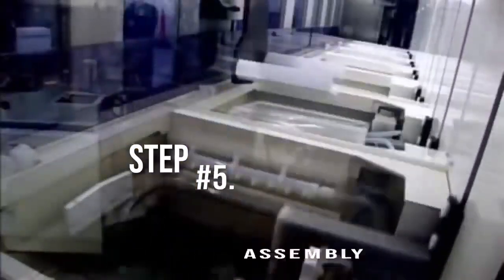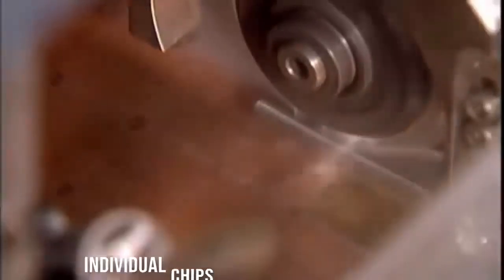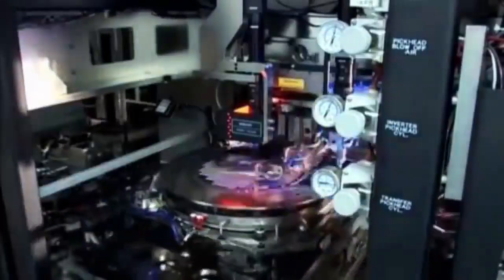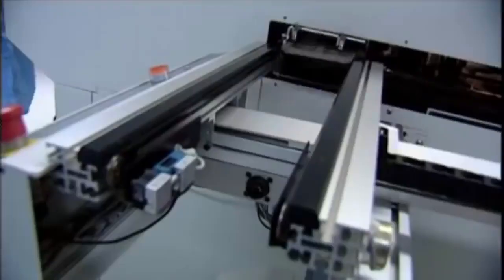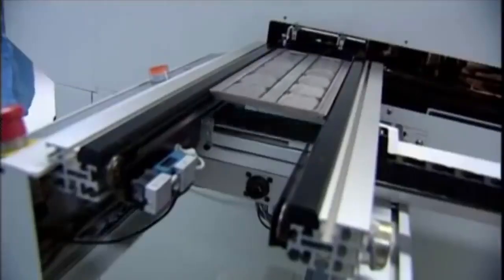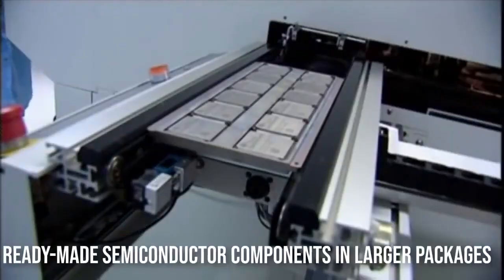Step 5: Assembly. The assembly is the stage where individual chips are placed on a package and the terminals are connected. The result is a semiconductor device that can be mounted on circuit boards employing various types of terminals. There also would be ready-made semiconductor components in larger packages that are used for power-related activities.